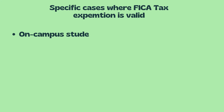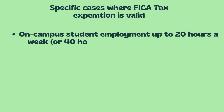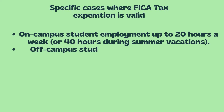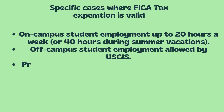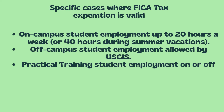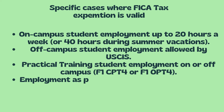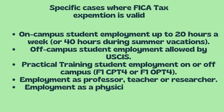Here are some specific cases where the FICA tax exemption is valid: a student working on campus up to 20 hours a week or 40 hours during summer vacations; off-campus student employment allowed by USCIS; practical training student employment on or off-campus such as F1 CPT or F1 OPT; employment as a professor, teacher, or researcher; and employment as a physician, au pair, or summer camp worker.